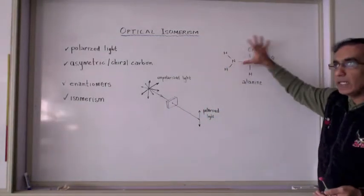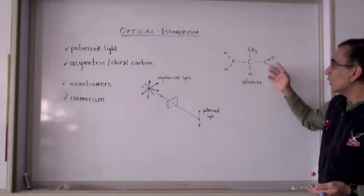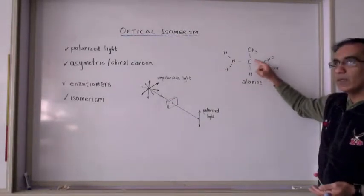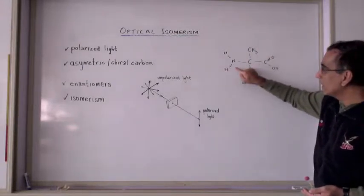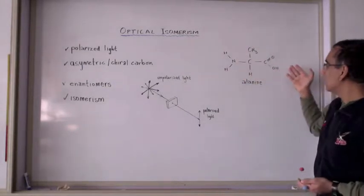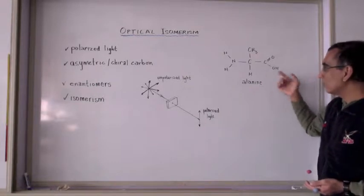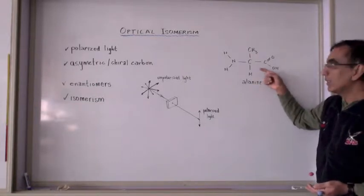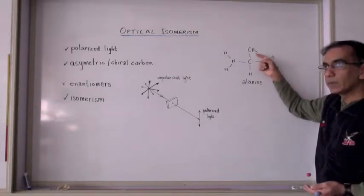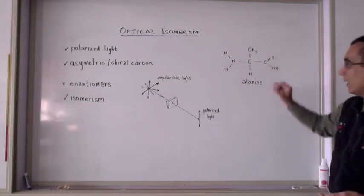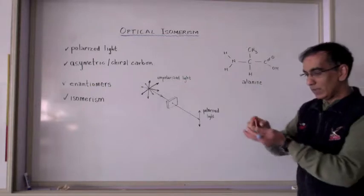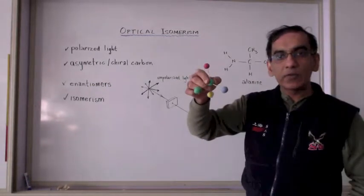Here on this planar diagram we can see carbon in the middle with the four bonds, each to a different group. Here the amino group, the carboxylic acid group, a hydrogen atom, and a methyl group. Each one a different structure, and the carbon sits in the middle of the tetrahedron.